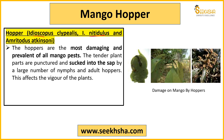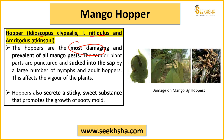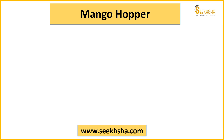Yeh mainly jo pests hai — hopper pest variety species hai jo aapke mango ko attack karte hai. Kaafi damaging inko consider kiya jaata hai — one of the most damaging pests mango ke andar. Yeh ek sticky sa substance bhi release karte hai, sweet substance hota hai, aur iski wajah se ek mold — jise kaala daag sa hota hai — aapne aam ke fruit ke upar bhi dekha hoga. Black se daag banne shuru ho jaate hai because of this sticky substance jo yeh pests release karte hai.